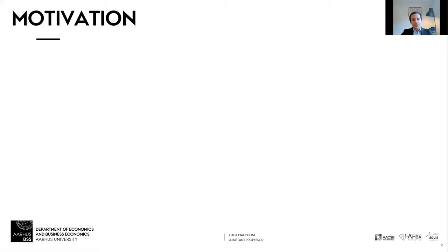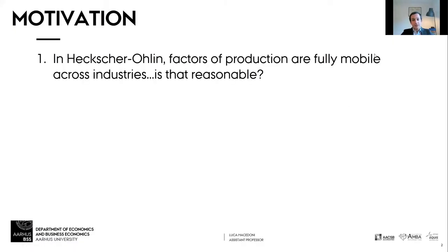The motivation for this model comes straight out of the limitations of the Heckscher-Ohlin model. In the Heckscher-Ohlin model, factors of production are fully mobile across industries, so labor and capital can freely move from industry one to industry two. If there is a trade shock — say Denmark trades with China — workers and machines can freely move from the labor-intensive good to the capital-intensive good. But we mentioned that this is perhaps not so easy for capital owners.